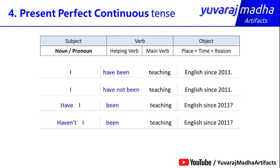You do not always need to specify the time. It is not necessary to use 'since' or 'for' every time. You can simply say: 'I have been teaching English.' or 'I have not been teaching English.' — without mentioning the time duration. It is not always required.